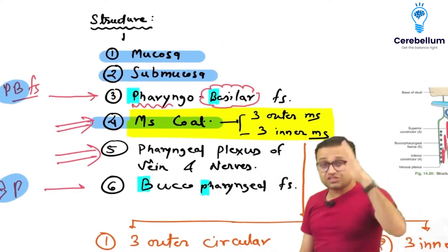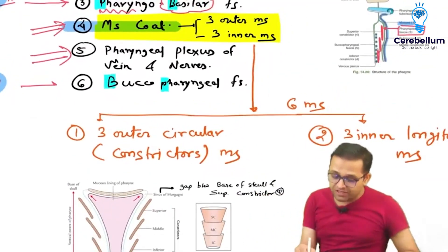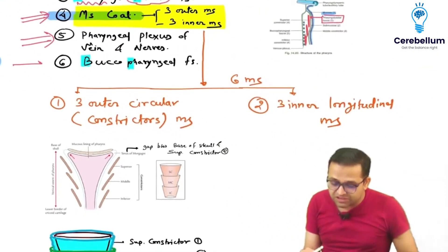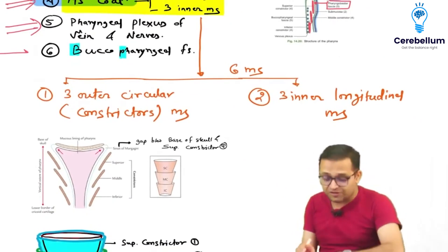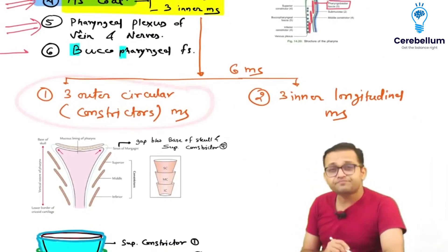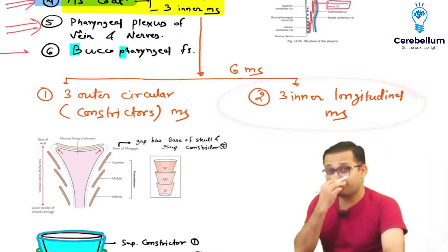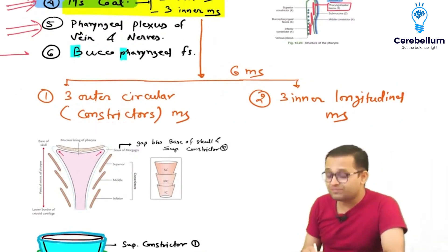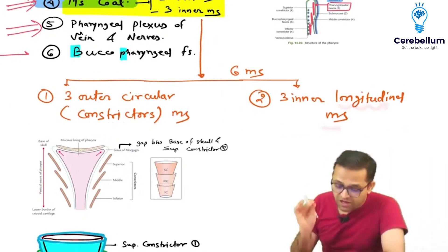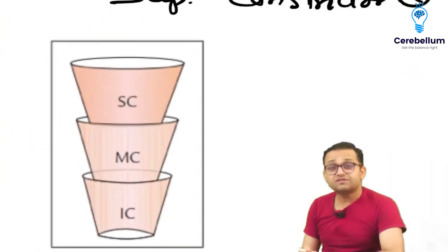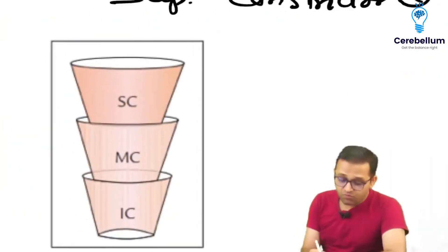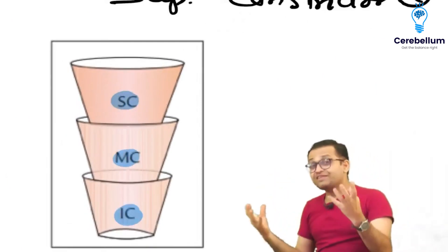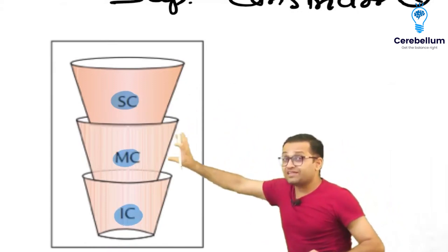This is a dedicated session for first MBBS students. We are talking about the muscles — three outer and three inner muscles, six muscles total in the pharynx. The three outer muscles are the constrictor muscles, and the three inner muscles are the longitudinal muscles. The three constrictors are the superior constrictor, middle constrictor, and inferior constrictor — arranged just like one pot placed inside another.